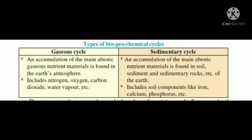The gaseous cycle is found in the Earth's atmosphere and includes the nitrogen, carbon, oxygen, and water vapour cycles. The sedimentary cycle includes soil components like iron, calcium, and phosphorus.